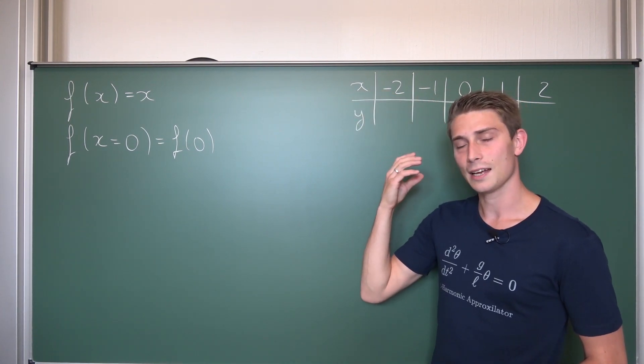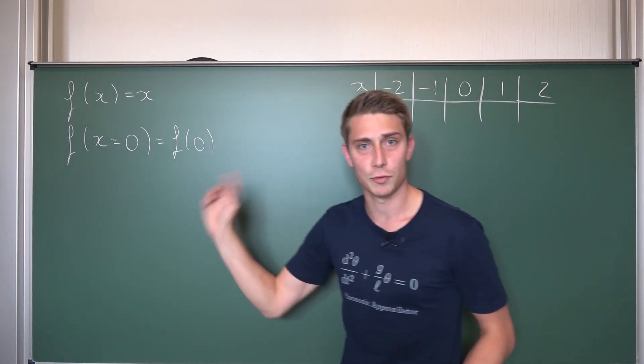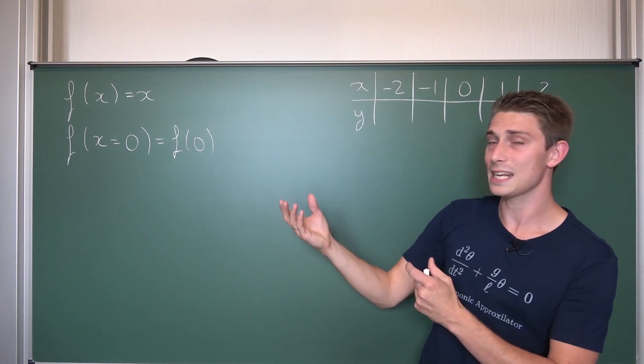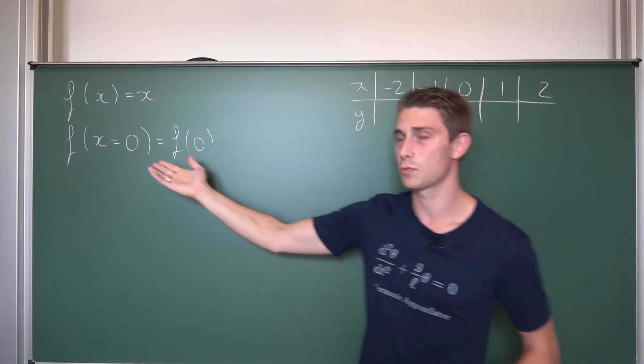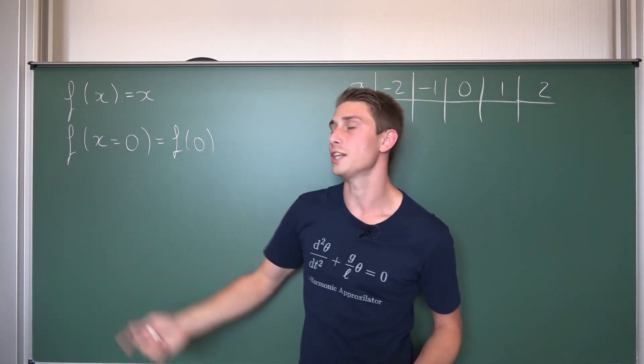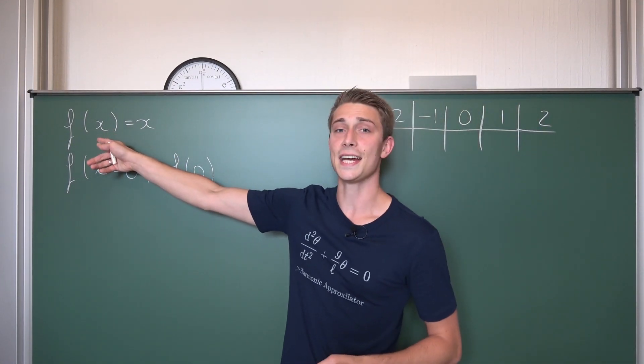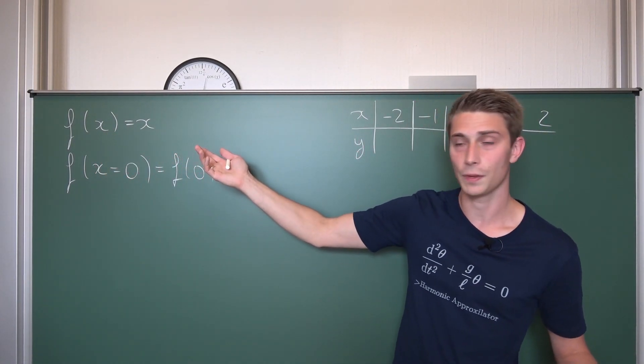So this is like the thing that students have the most problems with, understanding what it means to have f of 0. They don't understand that we are plugging in numbers for the x values, basically, now. And this is what this notation indicates, basically. So we are going to say, okay, all the things x in here are going to be 0.